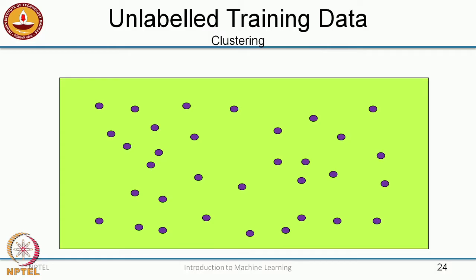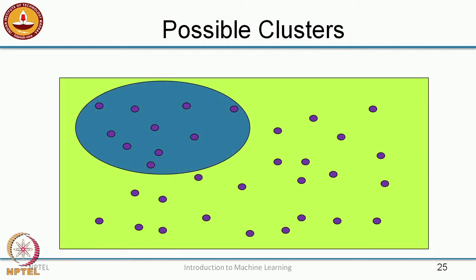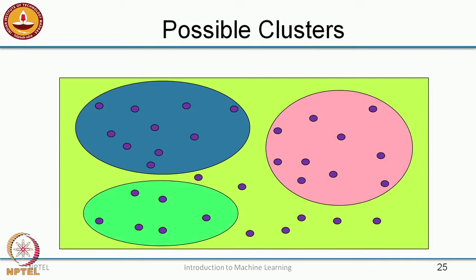We will first look at the problem of clustering, where your goal is to find groups of coherent or cohesive data points in the input space. Here is an example of possible clusters: those sets of data points could form a cluster, and again those, and those — so there are four clusters that we have identified in this setup.